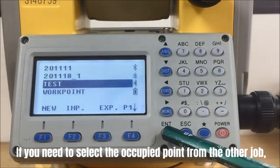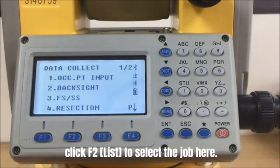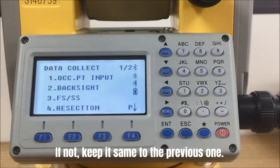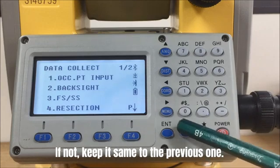If you need to select the occupied point from another job, click F2 List to select the job here. If not, keep it the same as the previous one.